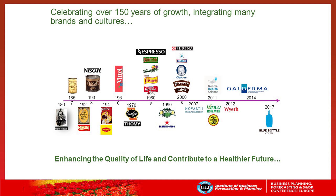If you look over 150 years — and that's a very important factor for the complexity of demand planning — since 1866 there have been many acquisitions. Some categories are very specific; the water business, for example, is very seasonal. You sell probably 75 to 80% of your yearly sales within May to September, sometimes even May to August. So there's very high complexity in terms of demand planning.